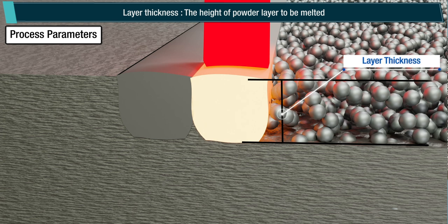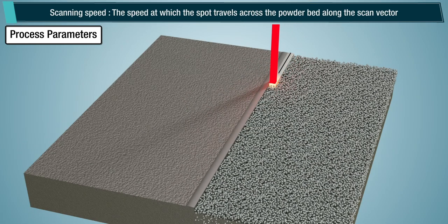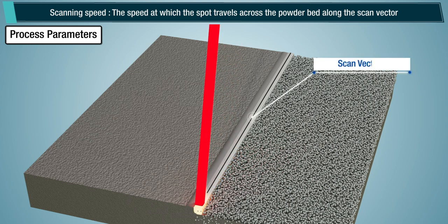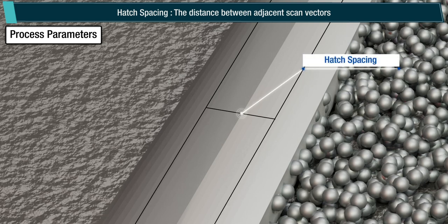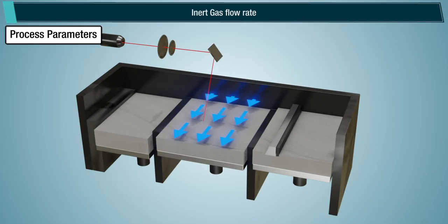Layer thickness, the height of powder layer to be melted. Scanning speed, the speed at which the spot travels across the powder bed along the scan vector. Hatch spacing, the distance between adjacent scan vectors. Inert gas flow rate.